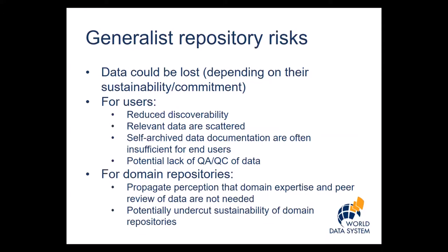For users, there may be risks in terms of reduced discoverability of data. The data may be scattered among many generalist repositories rather than one domain-specific repository. What I found is that often self-archived data documentation are insufficient for end-users — they just sort of dump the data with some code and consider that sufficient. And there may be a lack of QA and QC of the data being deposited in these generalist repositories, depending on whether a journal article is associated with those data and the quality of that journal.